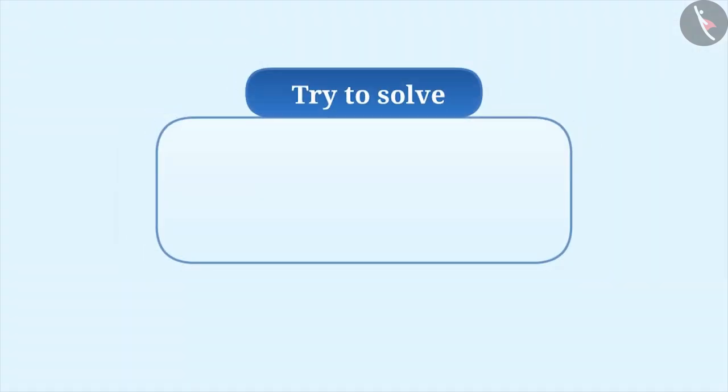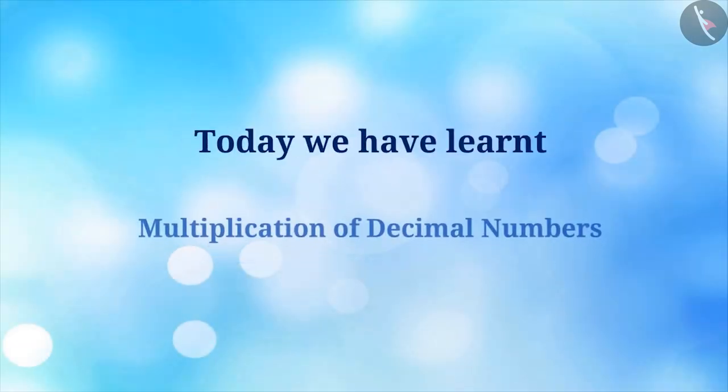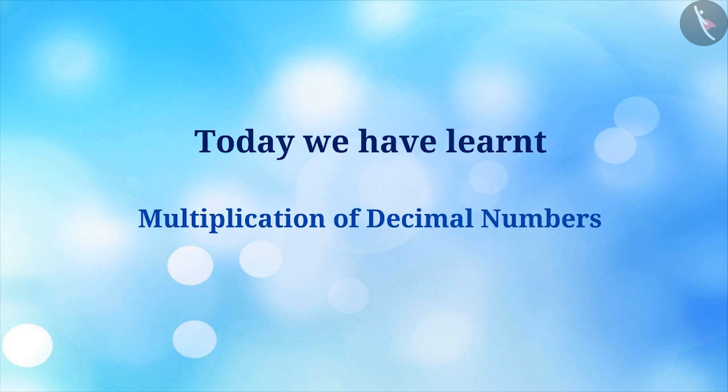Try to solve. 0.25 multiplied by 0.3 is equal to? Today, we have learnt multiplication of decimal numbers. In the next video, we will see examples related to the same.